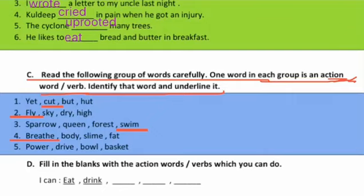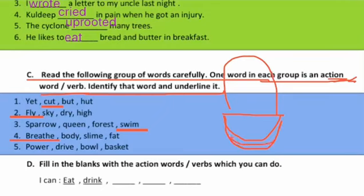Next set is: power, drive, bowl, and basket. 'Power' matlab shakti, 'drive' means kisi bhi gaadi ko chalaana — drive karna. 'Bowl' — jisme soup ya khana diya jaata hai. Aur 'basket' — usi tarah ki ek badi si tokri hoti hai. In sab mein jo action word hai vo hai 'drive'.